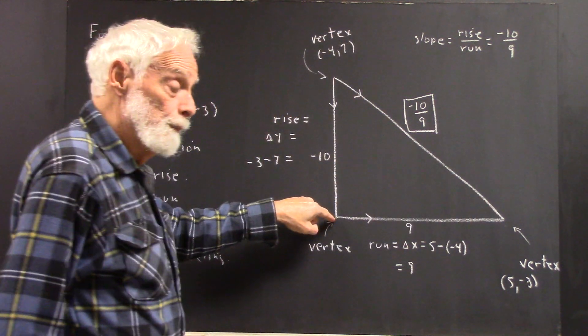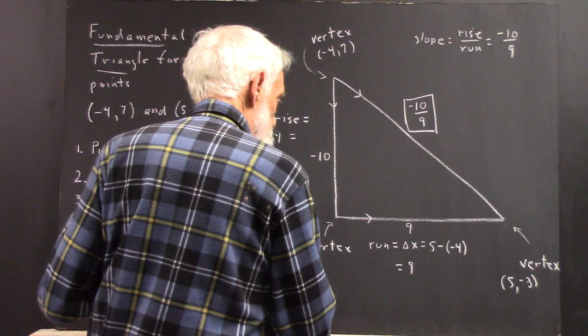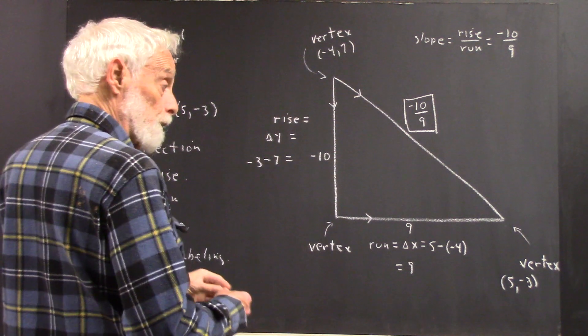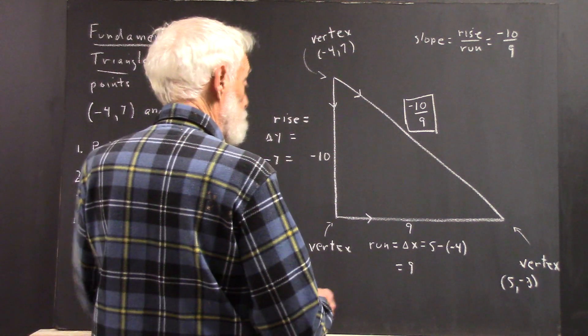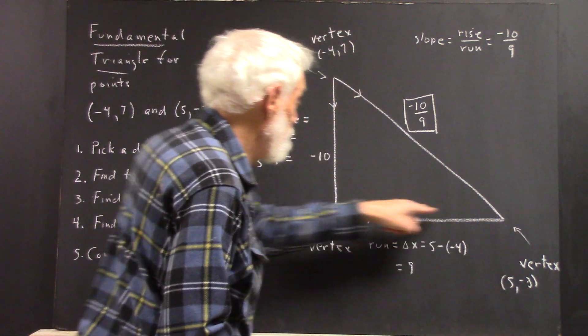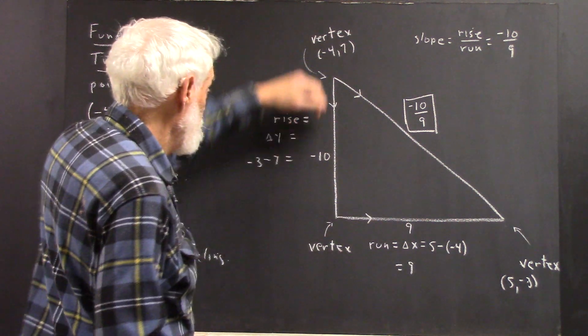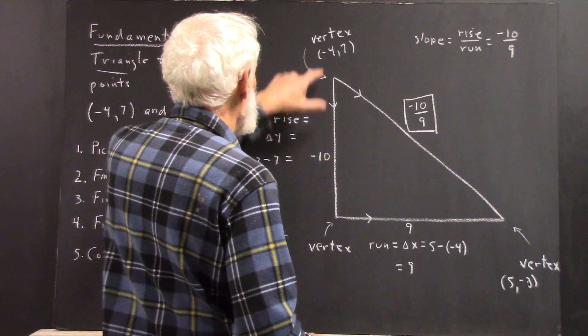Those points will be the vertices of your fundamental triangle on the hypotenuse. You have another vertex which is not on the hypotenuse. We could figure out what this vertex is, incidentally. It's going to have y-coordinate negative 3 because we have a horizontal line here. It's going to have an x-coordinate negative 4.